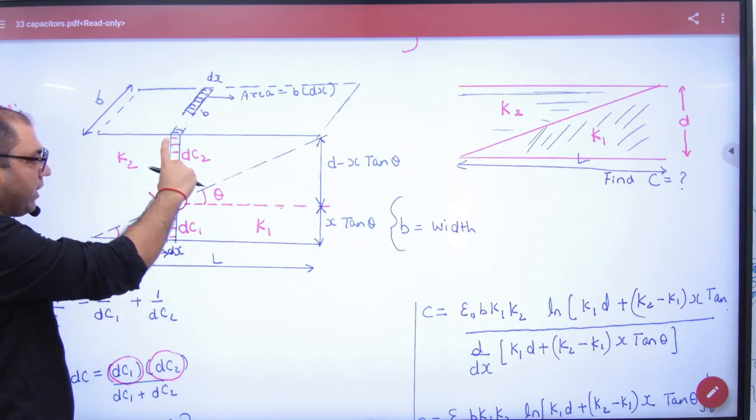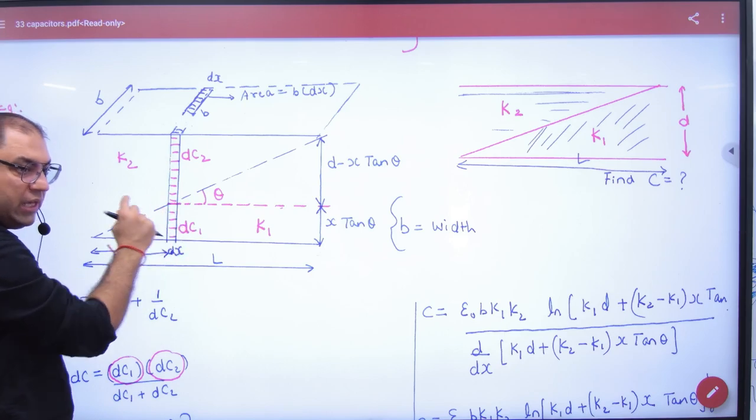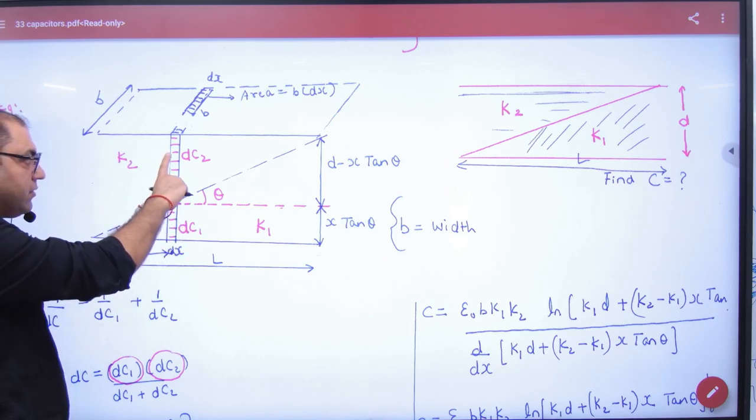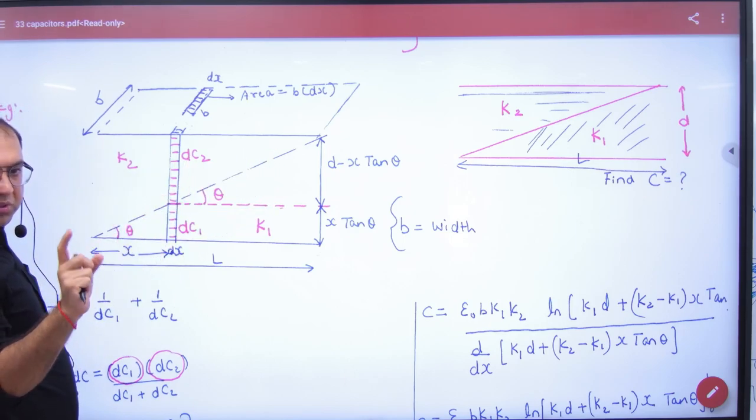So you will know that these two are connected in series. So first, you will take these two equivalent capacitance in series. Then this will be a small capacitance. Then we will integrate the answer. So its mathematics is simple.